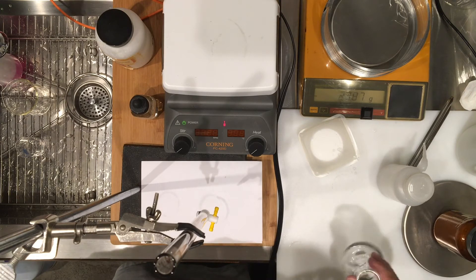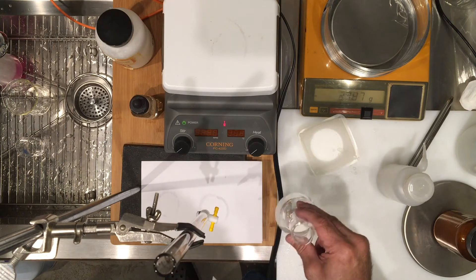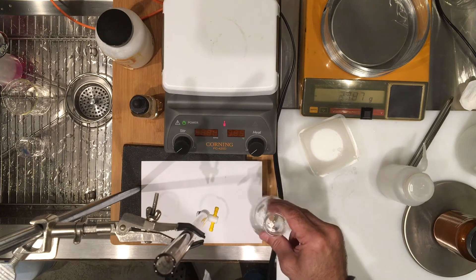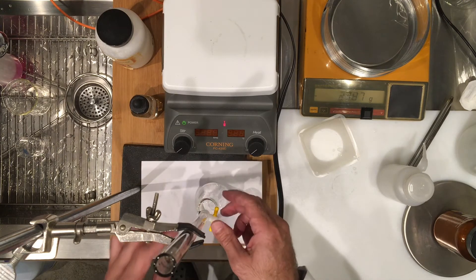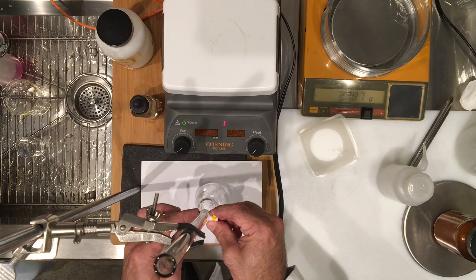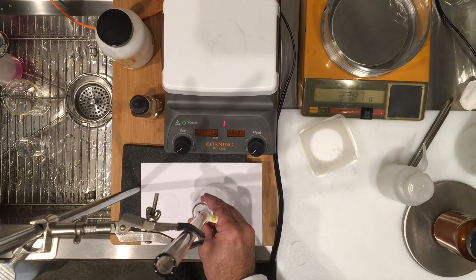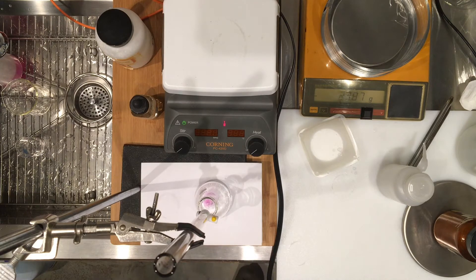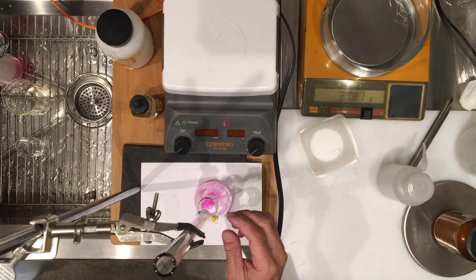Right now I know that the last titration took 20.3 milliliters, and this titration should take at least 20.3 plus more sodium hydroxide. So I'm going to just pour in 20.3 or roughly 20.5, and then we're going to add the remaining drop by drop. This is going to speed up our other titrations.